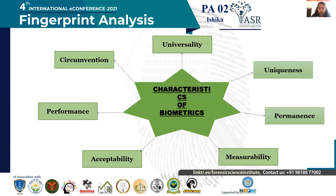The characteristics of biometrics: first, universality — this stipulates that we should be able to find our chosen biometric characteristic in the majority of people we expect to enroll in our system. Second, uniqueness — it is the measure of how unique a particular characteristic or trait is among individuals.